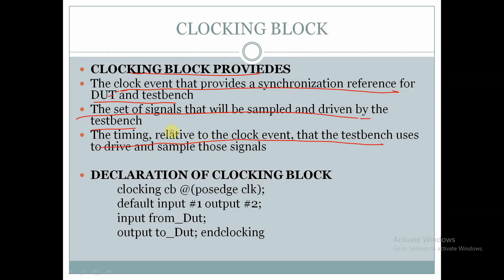This is the syntax of the clocking block declaration. 'clocking cb @(posedge clk)' — this is the event. Here 'default input #1 and output #2', where 'input signal' is the input with respect to the clocking block and 'output signal' is the output, and here we are ending the clocking block.